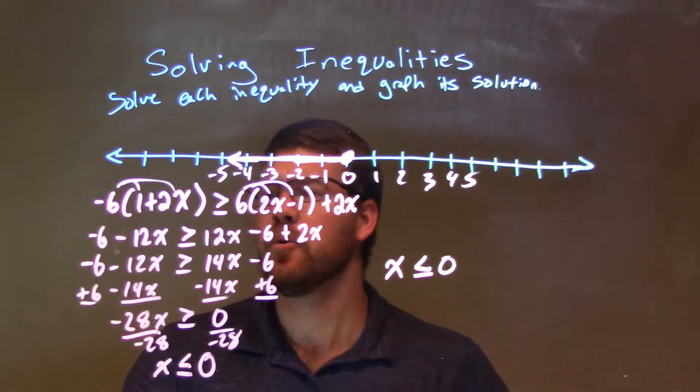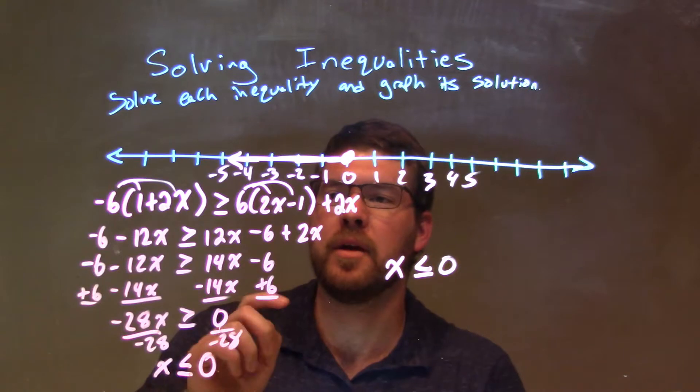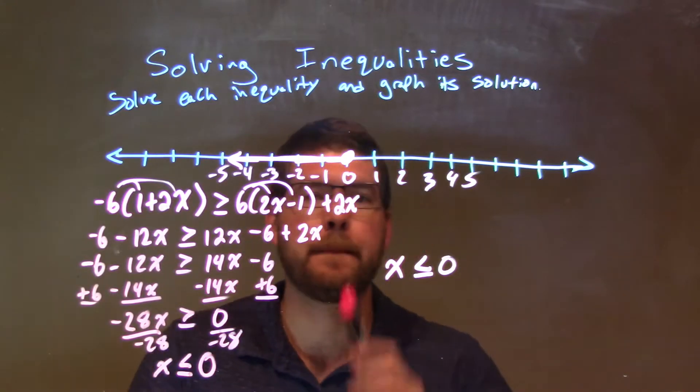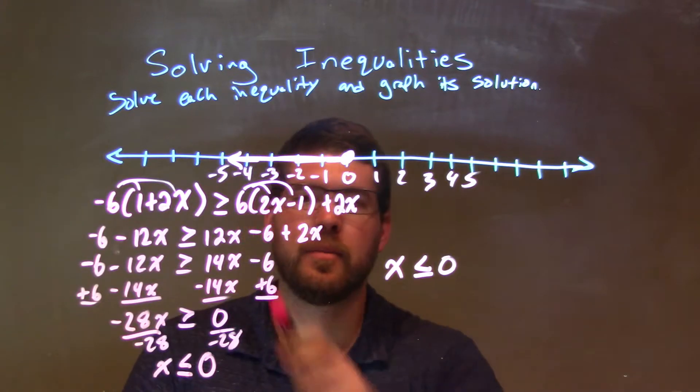Let's recap. We're given negative 6 times 1 plus 2x, and that's greater than or equal to 6 times 2x minus 1 plus 2x.